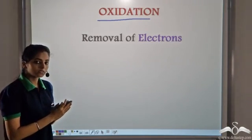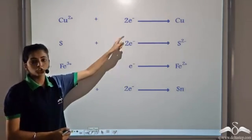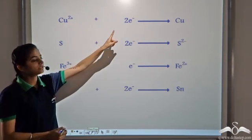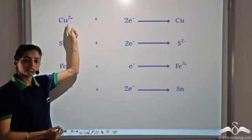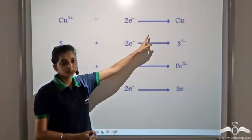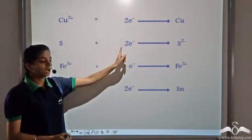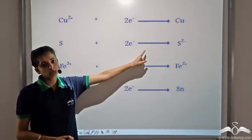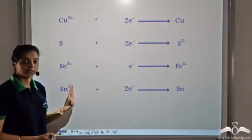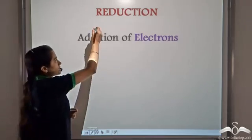When we take the reverse — that is, addition of electrons — let's look at these reactions. If we have Cu2+ and we add two electrons, since there was a deficiency of two electrons, when it takes two electrons it becomes a neutral Cu atom. Similarly, if we have a neutral sulphur atom and we add two electrons, it becomes S2-. So the process involving addition of electrons is known as reduction.